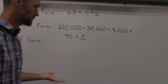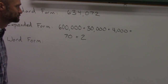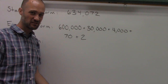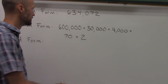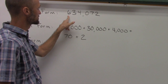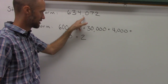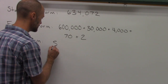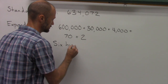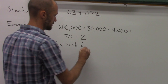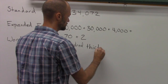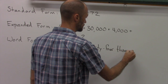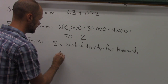The third way that we write numbers is Word Form. If you can say a number properly when it's written in Standard Form, that's exactly the way we write it in Word Form. So again, this is 634,072 — and that's the way we write it in Word Form: six hundred thirty-four thousand, seventy-two.